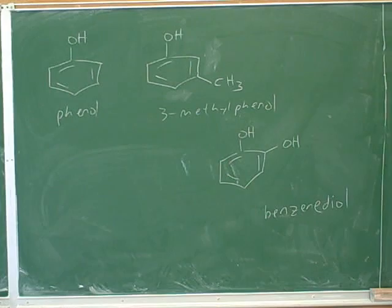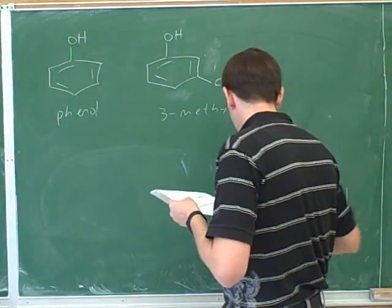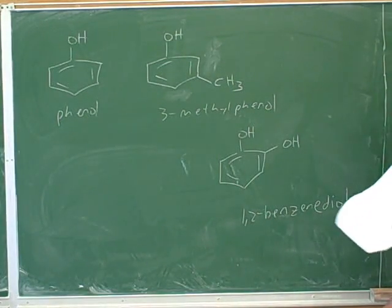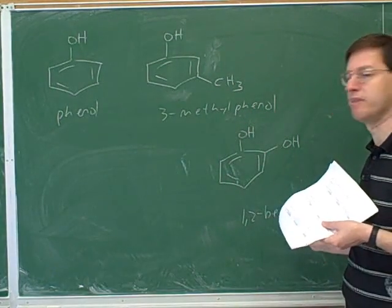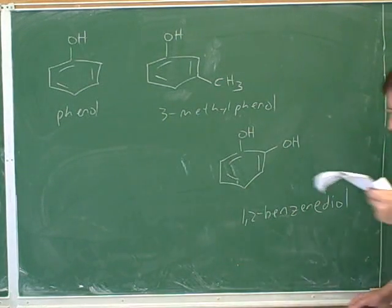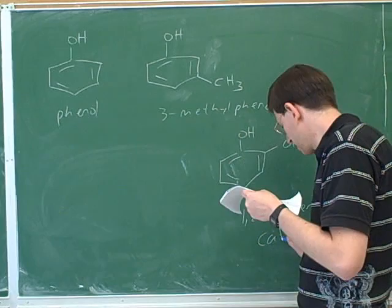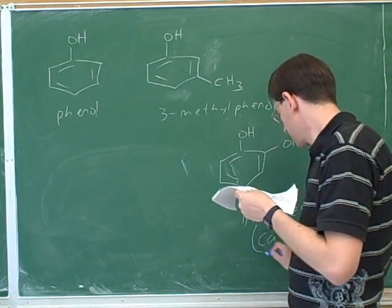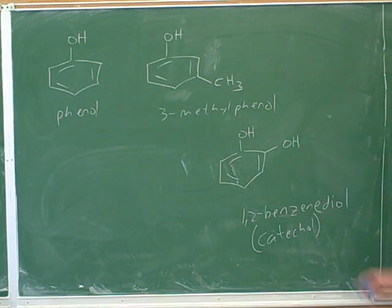And then we would need some numbers. 1 and 2. Right. So the name for this would be 1,2-benzenediol. So apparently, when there's more than one alcohol, we drop the phenol idea and we just go back to benzene. So this would be 1,2-benzenediol. There's a common name for this that I have seen. Catechol. I guess that's specifically for 1,2-benzenediol.